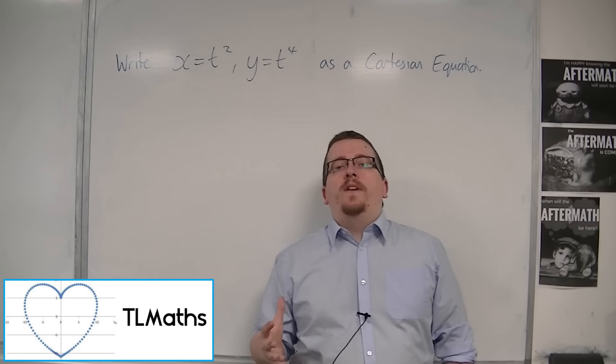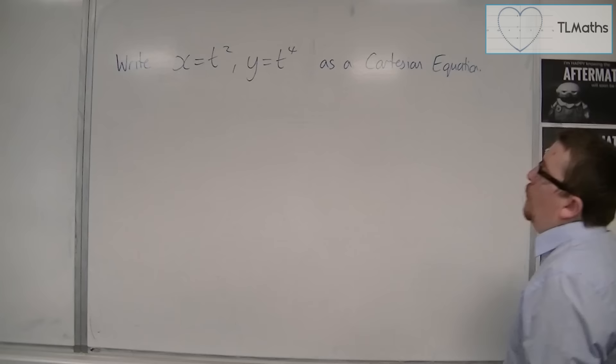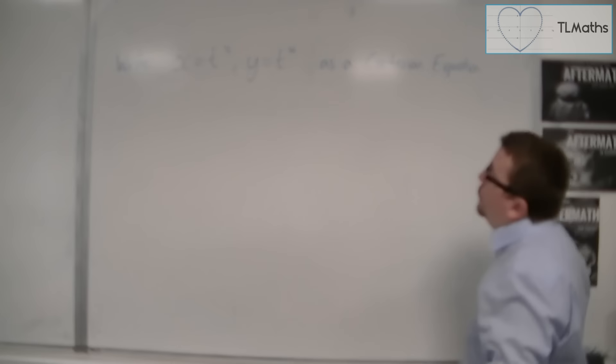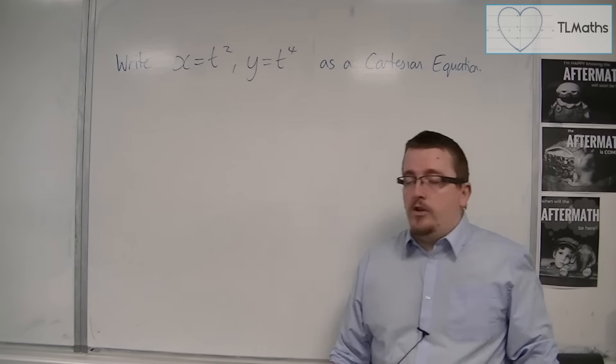What I want to show you in this video is a deceptively simple example where we write x equals t squared and y equals t to the 4 as a Cartesian equation.